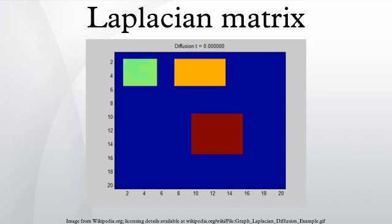The Laplacian is an operator on the n-dimensional vector space of functions f on V, where V is the vertex set of G and N = |V|. When G is k-regular, the normalized Laplacian is defined in terms of the adjacency matrix A and identity matrix I. For a graph with multiple connected components, L is a block diagonal matrix where each block is the respective Laplacian matrix for each component, possibly after reordering the vertices.